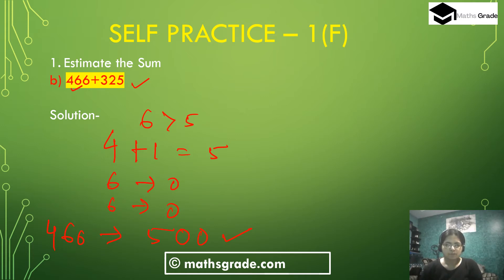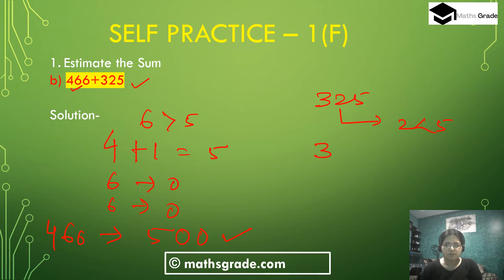Now 325: the tens place digit is 2, and 2 is less than 5. So don't add 1 to the hundreds place digit — write 3 as it is. The tens place digit and unit place digit change to 0. So 2 changes to 0 and 5 changes to 0. So 325 rounded to the nearest 100 is 300.